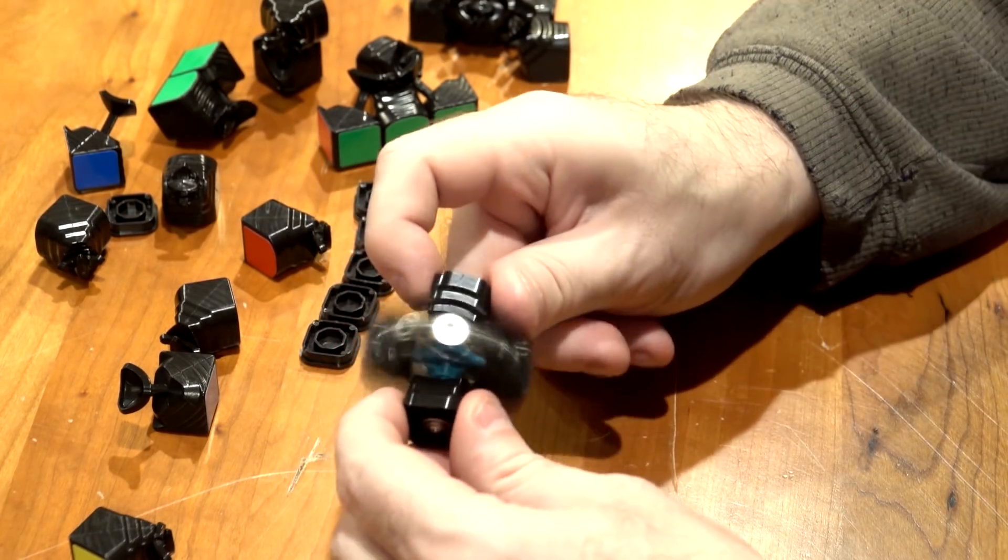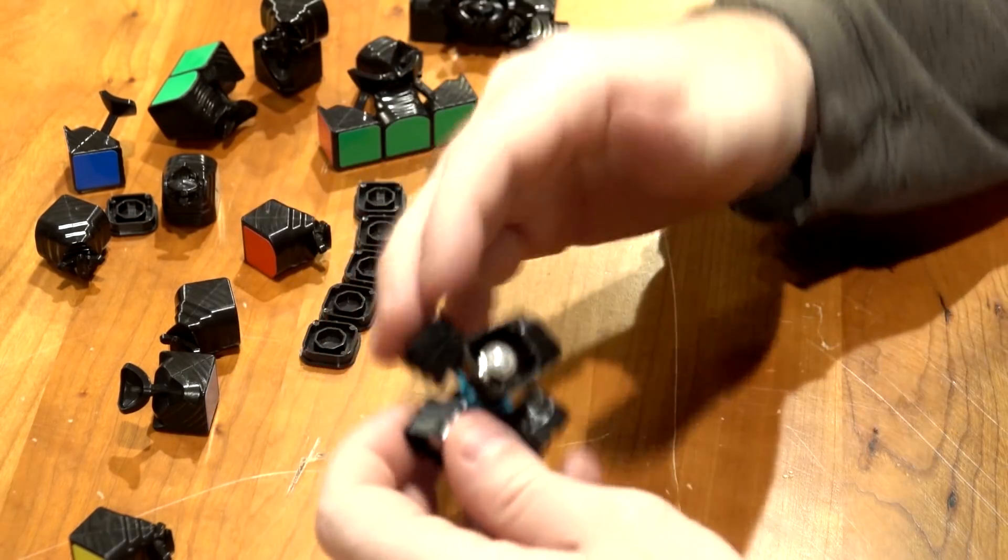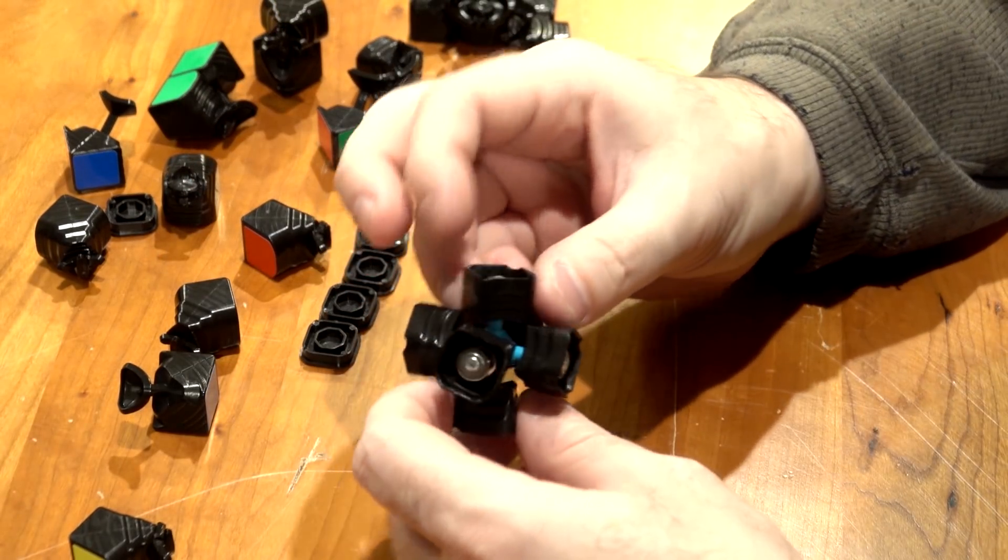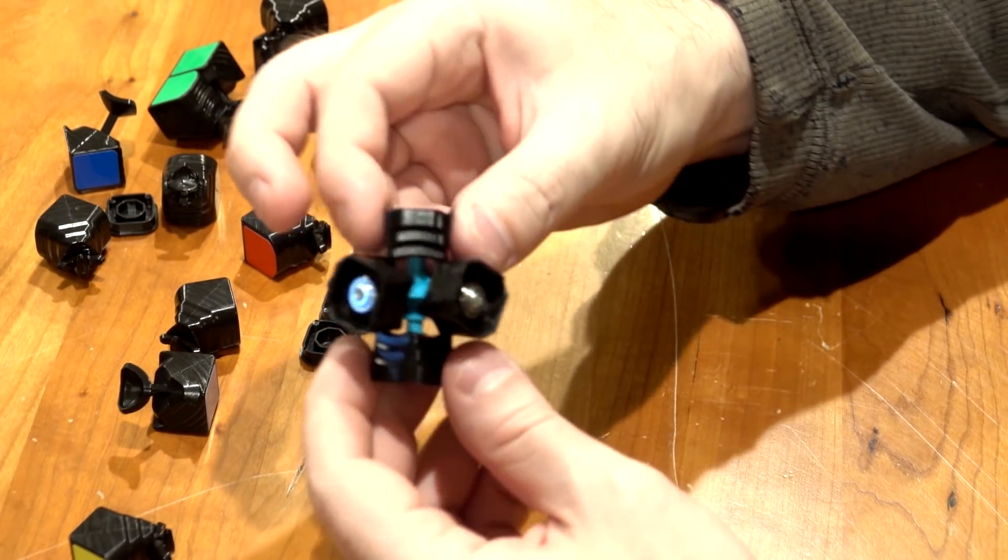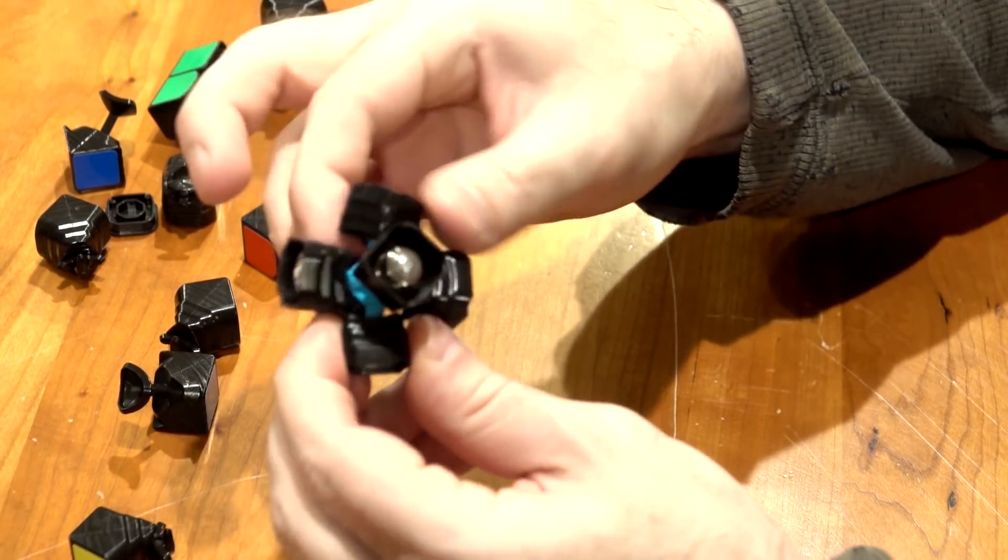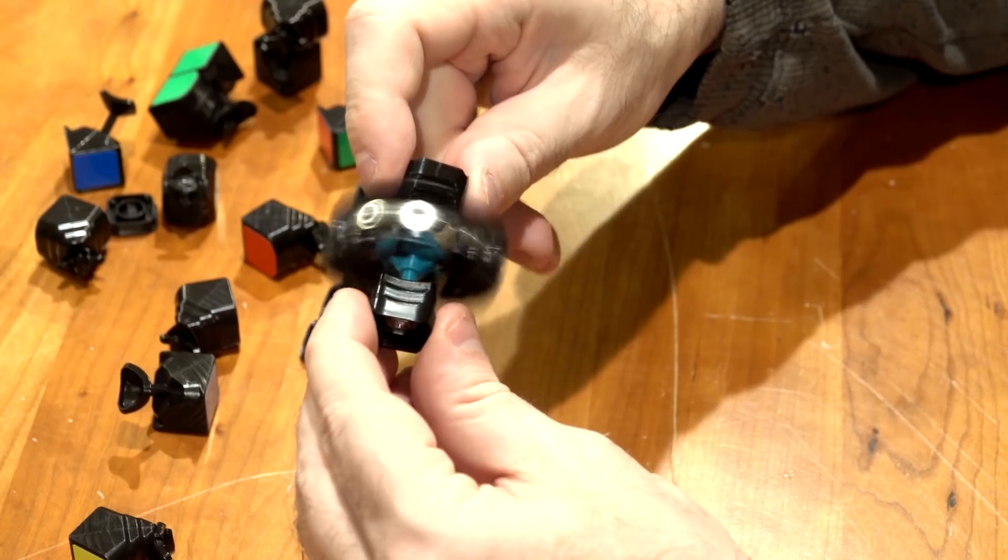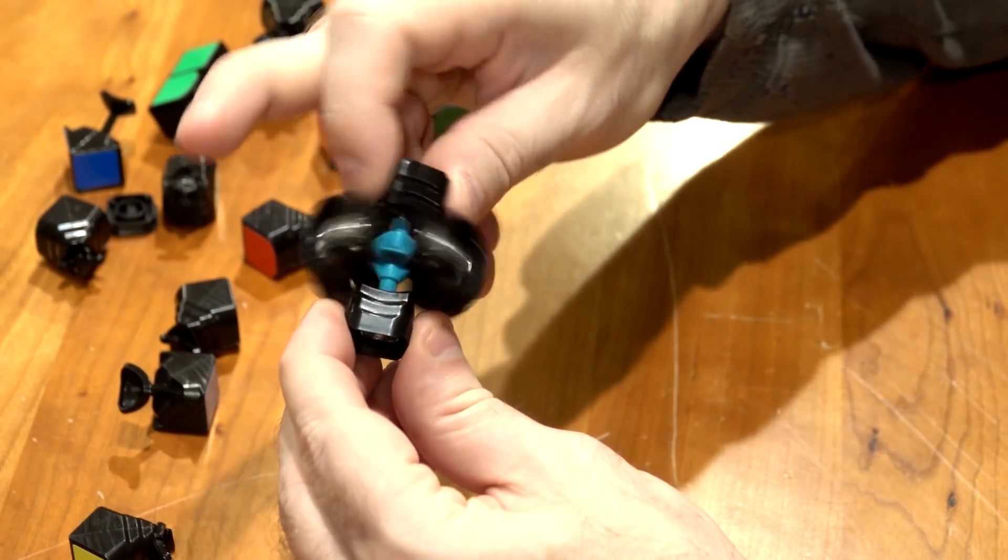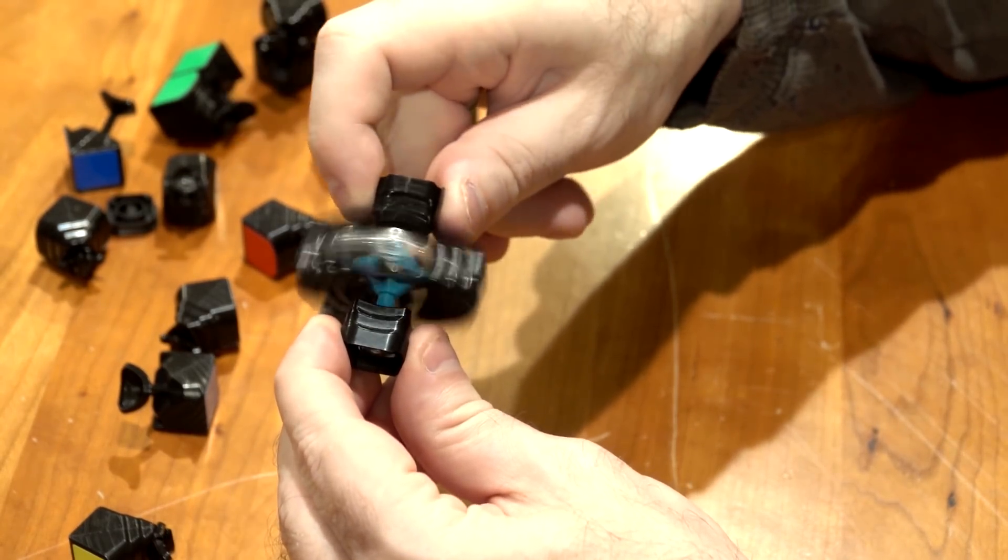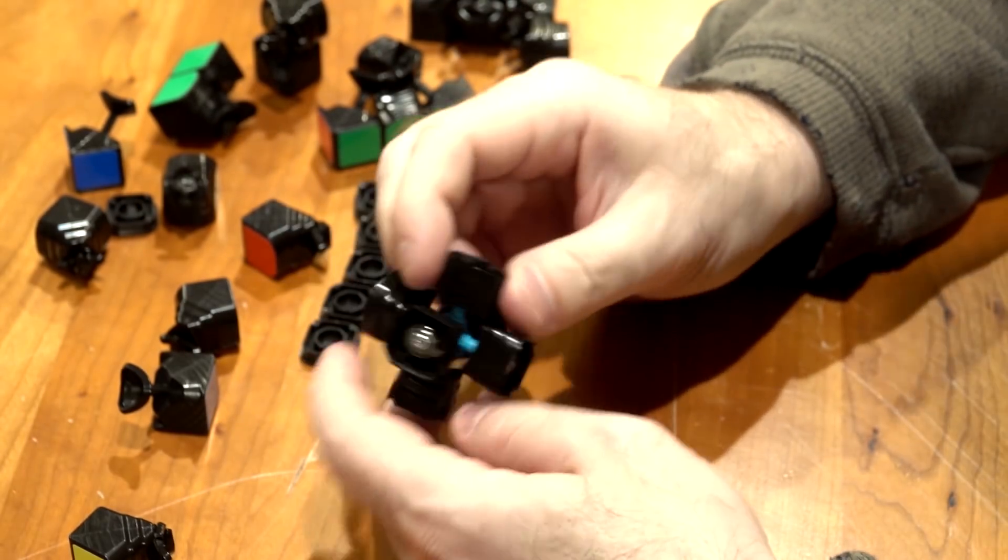So what this involves is taking a cube, removing all the springs from it, and instead of using springs you're going to use magnets on the inside. It still acts just like springs, although you get zero friction so your core is very free to spin and no spring noise or anything.